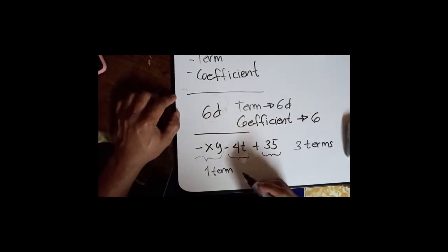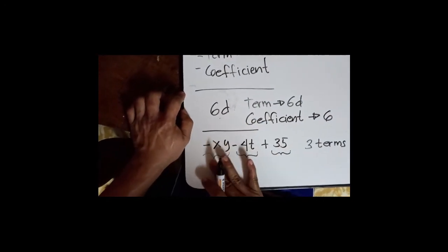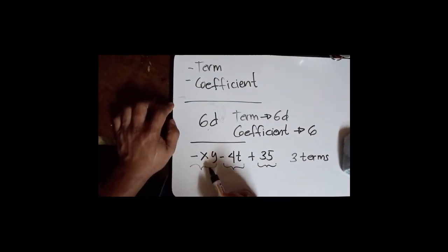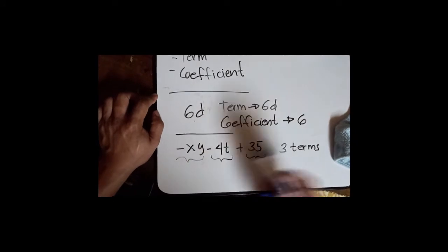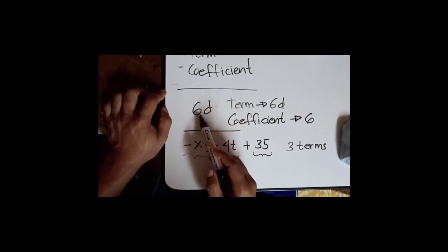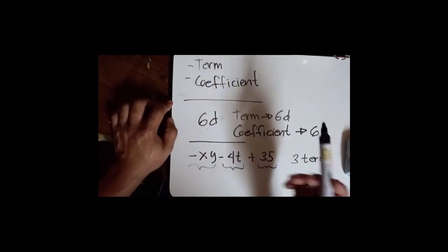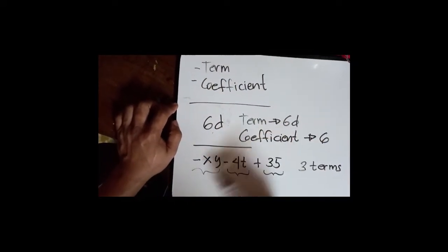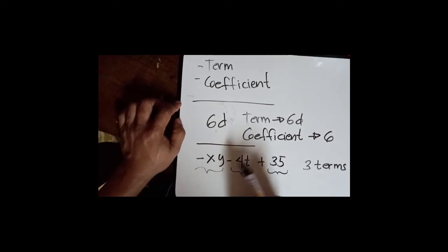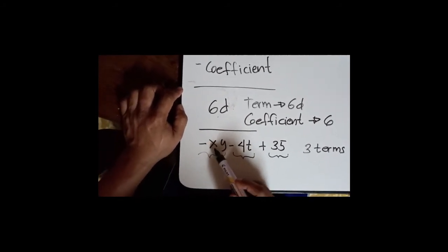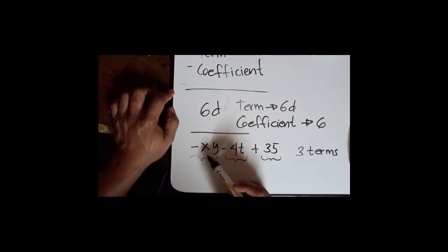So let's try to get the coefficient of each term. What is the coefficient of the first term? Now this is very different from our previous example, because in that example we have a leading number 6 that is very obvious. But for this example we don't see any numbers, any leading numbers. Negative x times y, so what is the coefficient of this?